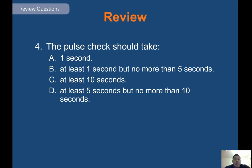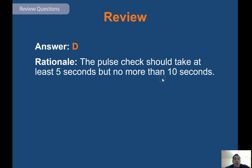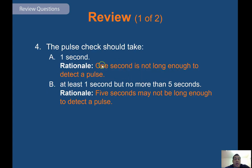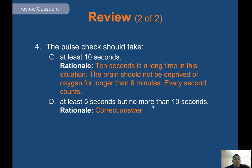A pulse check should take at least five seconds but no more than ten seconds. One second is too short; five seconds may not be long enough to detect a faint pulse; and ten seconds is too long in this situation. Remember, the brain should not be deprived of oxygen for longer than six minutes — every second counts. Sixty percent of time on scene should involve active chest compressions.